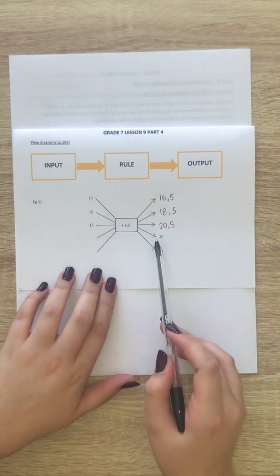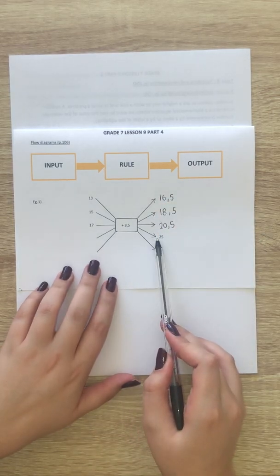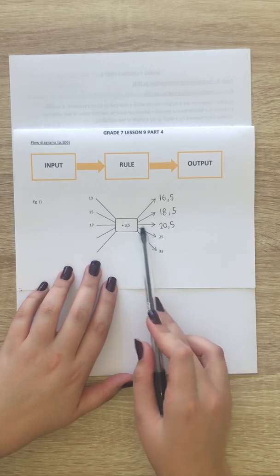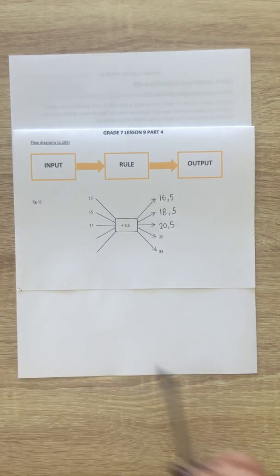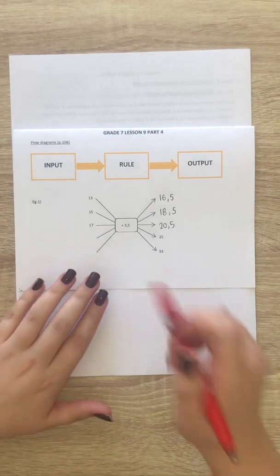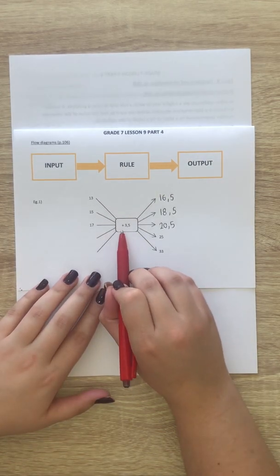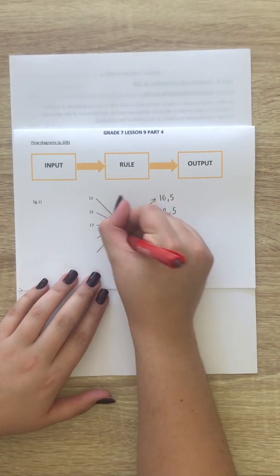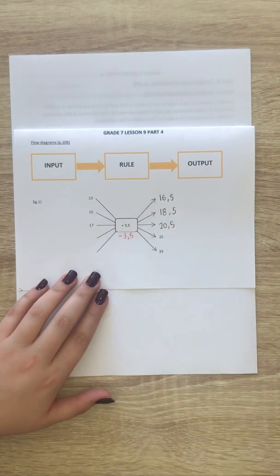Now the next one, the output number is given, but not the input number. So we're going backwards. And when we go backwards, we do the inverse. So if my rule is given as plus 3.5, my inverse would be minus 3.5.